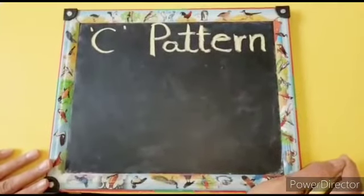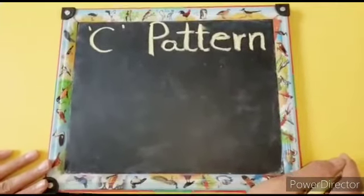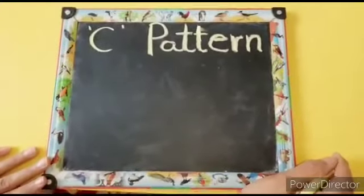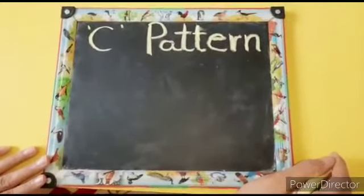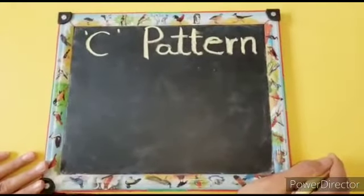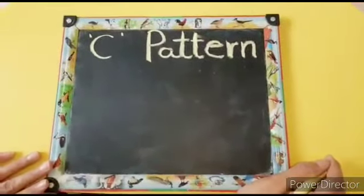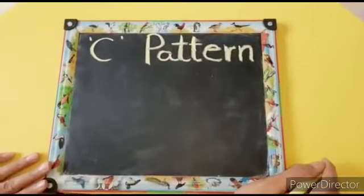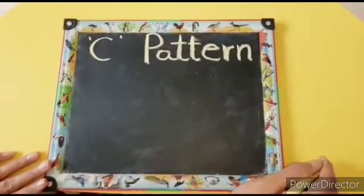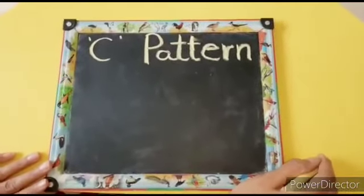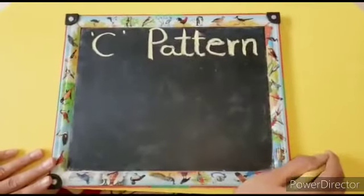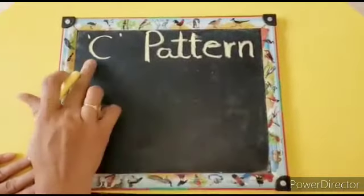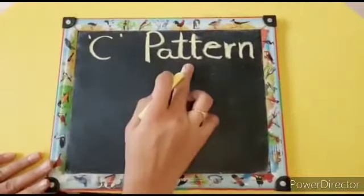Hello children! We have already learnt about the patterns: standing line, slipping line, slanting line to the right, and slanting line to the left. Today we will learn a new pattern. It is called the C pattern.